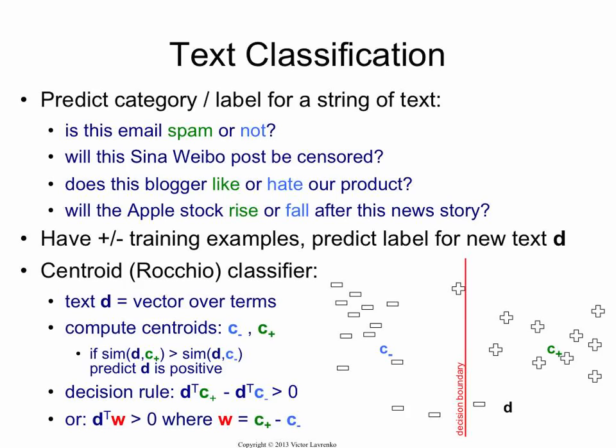This is all to relate the Rocchio algorithm, which we're familiar with, to more generic machine learning concepts. This vector W — the difference of C-plus and C-minus — is a vector perpendicular to the decision boundary, a normal vector. You've seen these normal vectors in machine learning before. So we have our weight vector W, and if the dot product of W with our document is positive, we classify the document as positive.